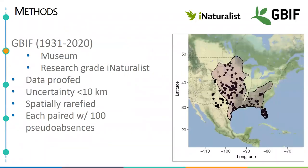We used museum records and research-grade citizen science observations from 1931 to 2020 obtained from GBIF. All records were examined for date, georeferencing, and taxonomic errors, and we only kept records with a coordinate uncertainty of less than 10 kilometers. After that, we spatially rarefied records to 10 kilometers to reduce issues with spatial autocorrelation in our models. The final set of locations is shown on the map on the right. We then paired each location with 100 pseudo-absence points, randomly drawn and constrained to a convex hull around the eastern spotted skunk occurrences.